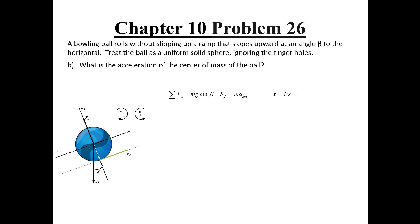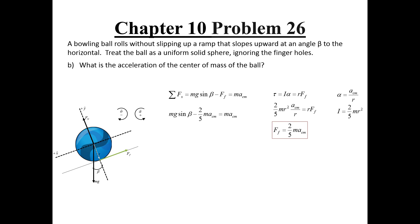Since the force of friction is tangent to the surface of the ball, we use the torque definition: moment of inertia times angular acceleration equals the force of friction multiplied by the radius. Recalling the definitions for angular acceleration and moment of inertia of a sphere, we substitute into the torque equation and rearrange to find an expression for the frictional force. Plugging this back into our Newton's second law equation, the x-component of gravity minus two-fifths times mass times acceleration equals mass times acceleration. The mass cancels out, and isolating the center of mass acceleration gives five-sevenths g sine beta.